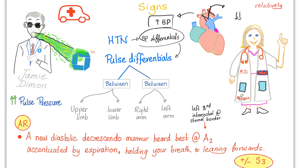There is also high pulse pressure, as well as a new murmur of aortic regurgitation — a new diastolic decrescendo murmur, heard best at the A2 area, which is the left third intercostal space, very close to the sternal border. It is accentuated by expiration. The doctor asked the patient to exhale maximally and lean forward, and the diastolic decrescendo murmur was very clear.